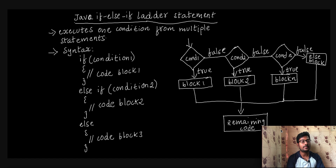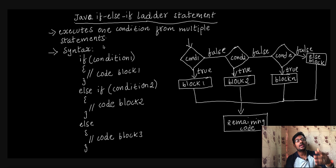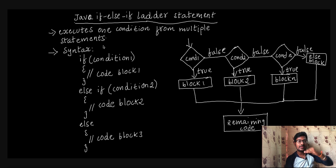If we use the Java if-else-if ladder, we will use a set of statements. If we don't satisfy any condition, we will check the other conditions. If we already have the other conditions, we will check the same.